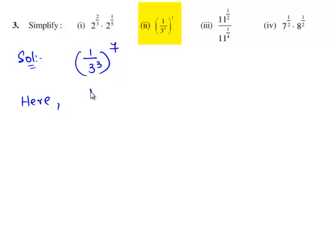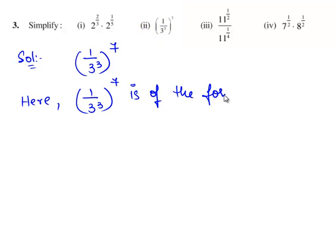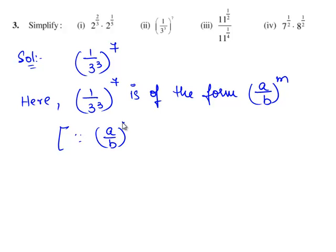Here, 1 by 3 raised to the power of 3 whole raised to the power of 7 is of the form a by b whole raised to the power of m. As we know, a by b whole raised to the power of m is equal to a power m by b power m.